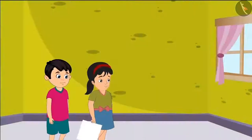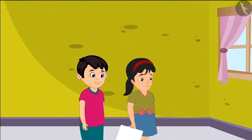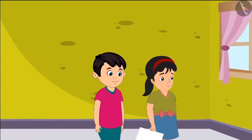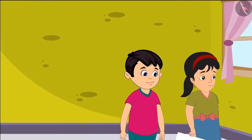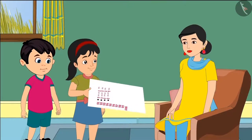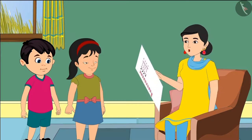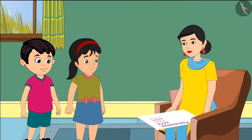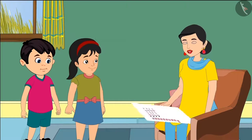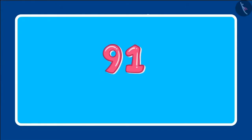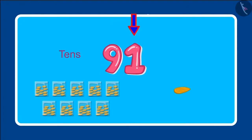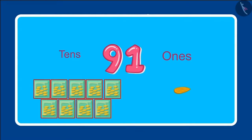Both of them are going to show the chart to their mother before writing further. Mummy, look, we are preparing this chart to put in class. Hey children, you have written it upside down. We write 91 like this — there are nine tens and one ones in it. That means nine bundles of ten and one loose.